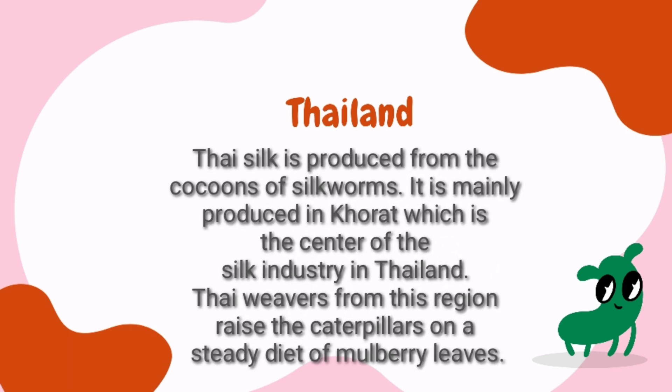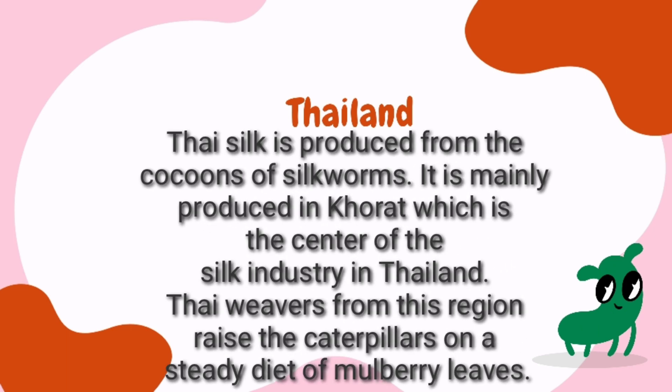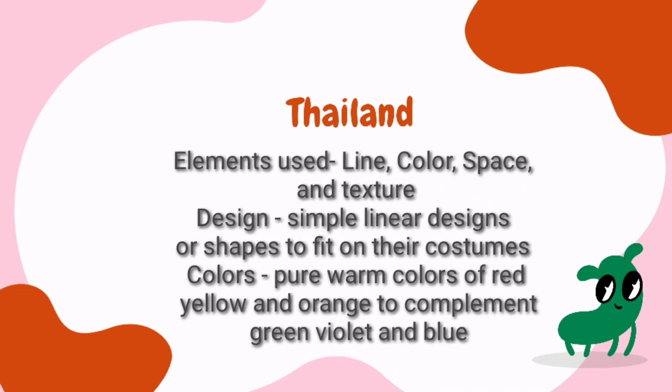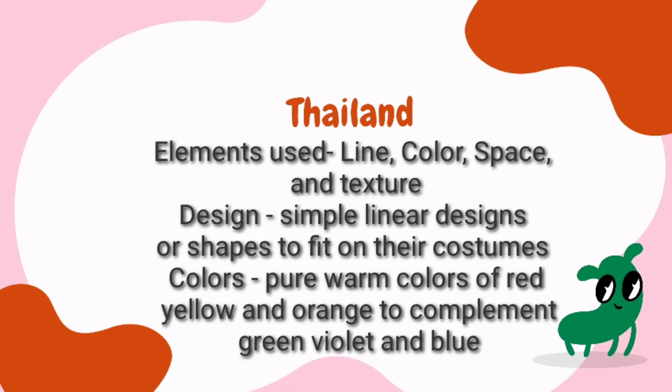Let's talk about the arts and crafts of Thailand. Thai silk is produced from the cocoons of silkworms. It is mainly produced in Korat, which is the center of the silk industry in Thailand. Thai weavers from this region raise the caterpillars on a steady diet of mulberry leaves. Elements used in Thailand: Line, Color, Space, and Texture. Design: Simple linear designs or shapes to fit on their costumes. Colors: Pure warm colors of red, yellow, and orange to complement green, violet, and blue.